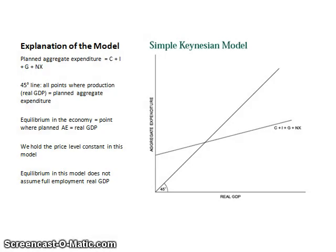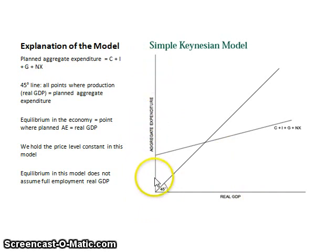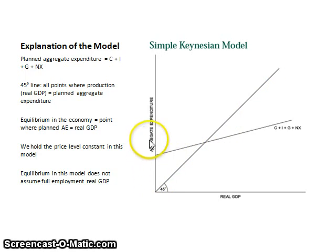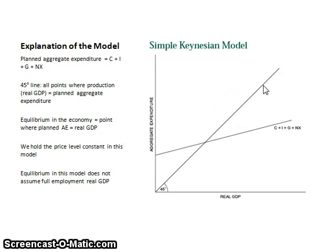The model itself that Keynes developed, based on some of these assumptions, looks like this. On the vertical axis we have aggregate expenditures, or total spending. On the horizontal axis we have real GDP. Keynes drew a 45-degree line, which represents an equilibrium between aggregate expenditures and real GDP. At every point along this line, spending done by consumers, firms, governments, and people living abroad would be exactly equal to the output of a nation.